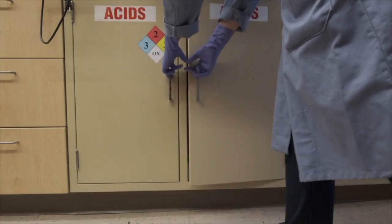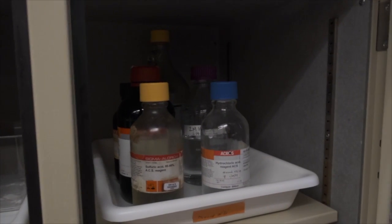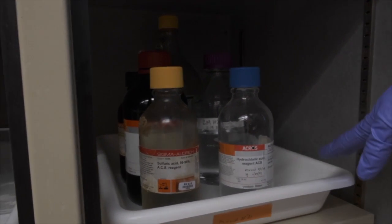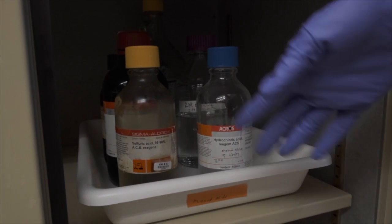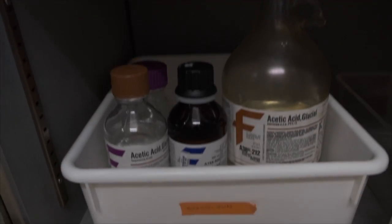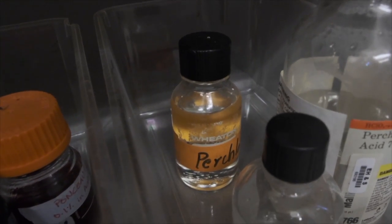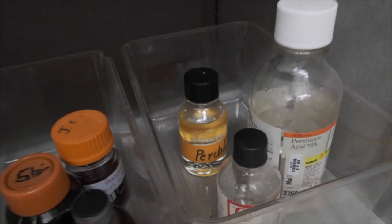For example, let's take a look at how to properly segregate acids based upon their compatibility. Use secondary containment bins to help segregate your acids. You want to store your inorganic acids like hydrochloric and sulfuric separately from the organic acids like acetic and oleic acid. Oxidizing acids such as perchloric and nitric acid should be kept separate from the other acids because of their reactive properties.